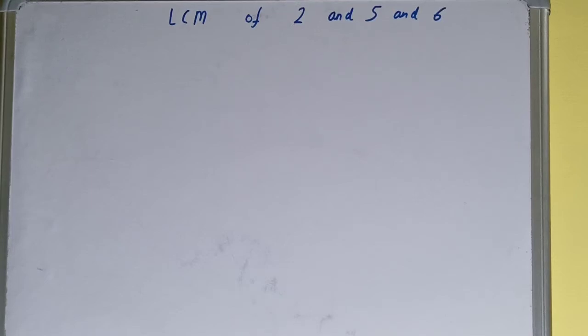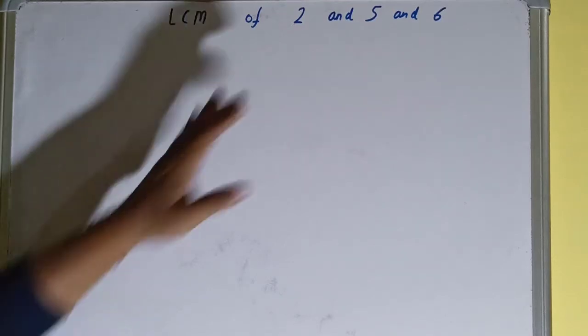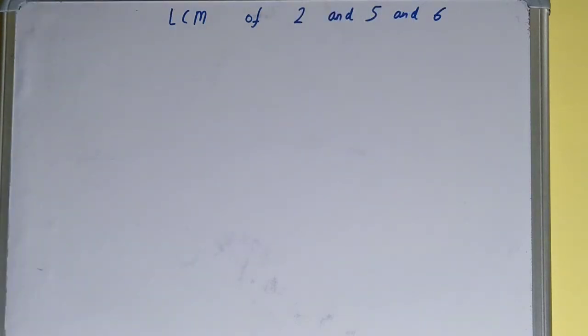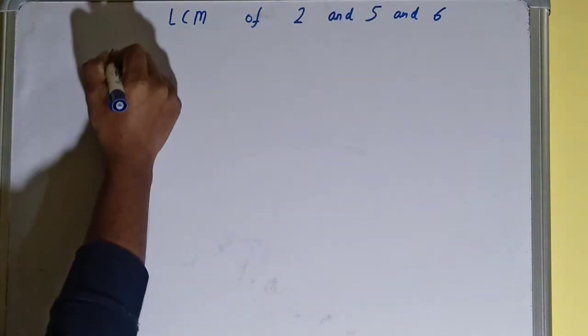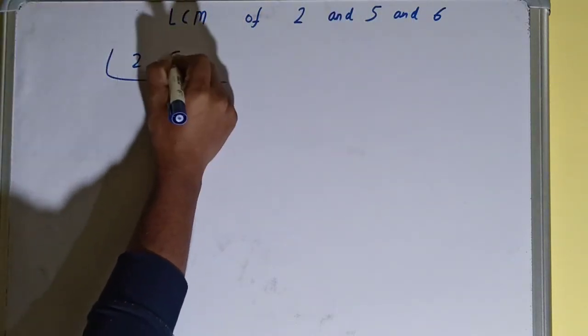Hello friends, and in this video I'll be helping you with the LCM of the numbers 2, 5, and 6. So let's start. To find it out, first you need to write all the numbers like this: 2 comma 5 comma 6.